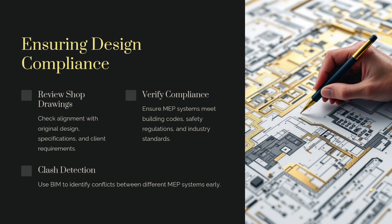Under design compliance, we have: review shop drawings, verify compliance, and clash detection. So what is the review of shop drawings? Basically, before the drawing is approved or before submitting to your consultant for review and approval, you also need to check how the route is going to happen at site. If you find clashes or any issues, you can review and inform the concerned team for changes. In the section drawings, you need to ensure how the cable tray, duct, or chilled water pipes are routed at site.